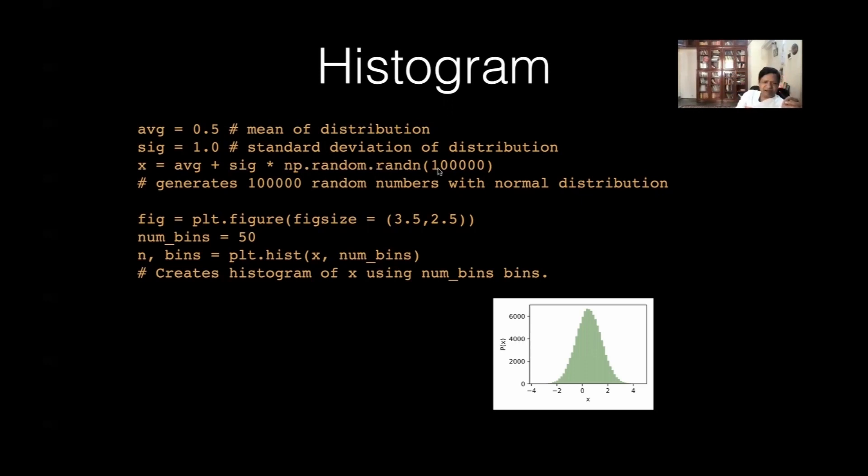Now, this one we will create with 0 mean and standard deviation of 1. Okay. Now, but I want to change my standard deviation and average. So, this one average is 0.5. Standard deviation remains the same. Okay. I did not change it.